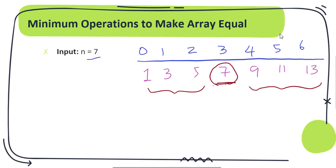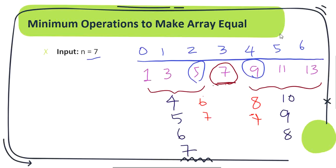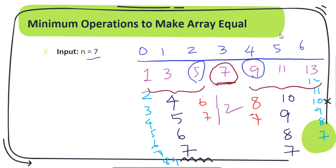First consider 5 and 9: add one to 5 and subtract one from 9 to get 6 and 8, then again to get 7 and 7 — that takes 2 steps. Next, 3 and 11 become 4 and 10, then 5 and 9, then 6 and 8, then 7 and 7 — that takes 4 steps. Finally, 1 and 13 follow the same pattern and take 6 steps.